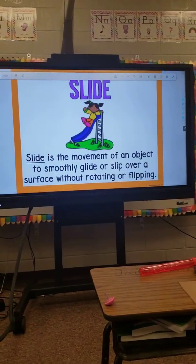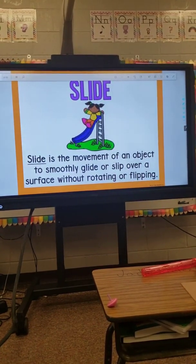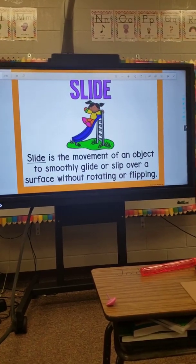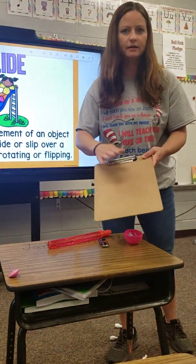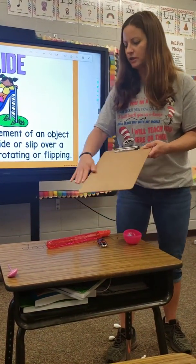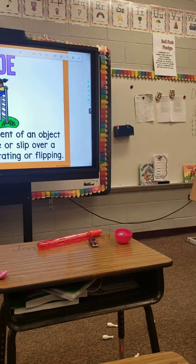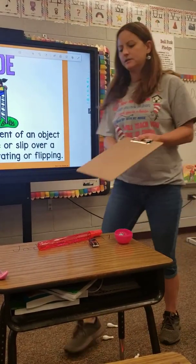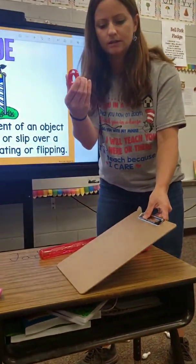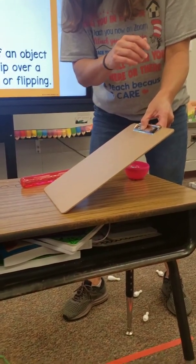Slide. Slide is the movement of an object to smoothly glide or slip over a surface without rotating or flipping. So we're going to pretend like this is my slide. We don't want anything to rotate like wheels. So if I put this magnet onto this slide, we're going to see the motion of slide — right onto the floor. That is sliding.